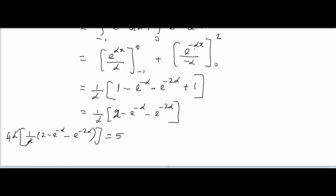So, we can cancel α. When I multiply by this 4, I get 8 - 4e^(-α) - 4e^(-2α), bring 5 to the left side, minus 5 equals 0.